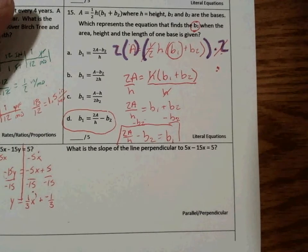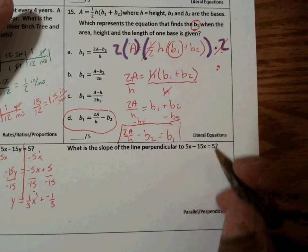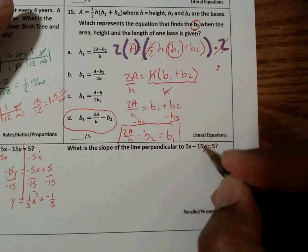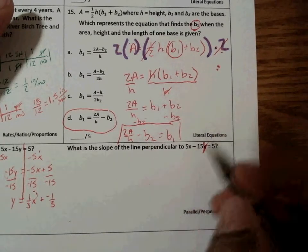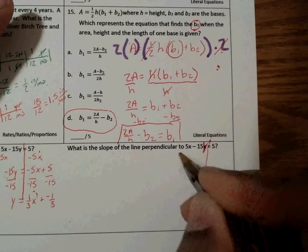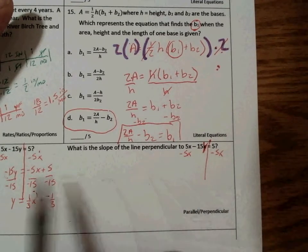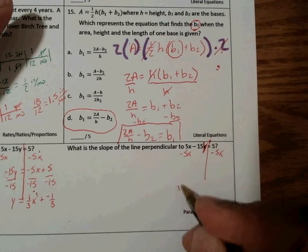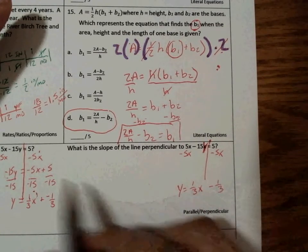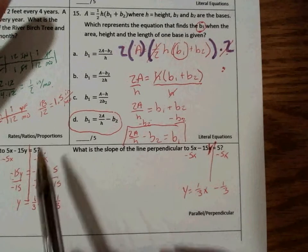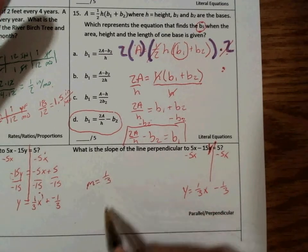And when we look at the second part of number 16, it says what is the slope of the line perpendicular to 5x minus, and that should be a y here, that's a typo. So we do the same thing, subtract 5x the furthest thing away. And actually it's the same problem as here, so we know we're going to have y is equal to 1/3 x minus 1/3. We can follow the same steps that we did over here, and we know the slope is 1/3.